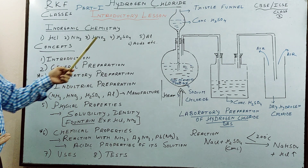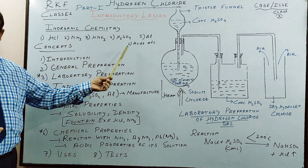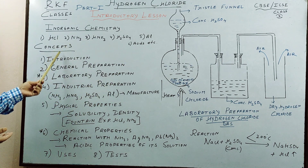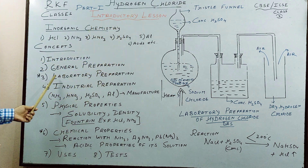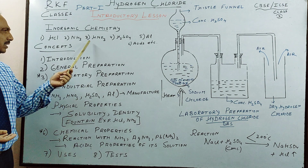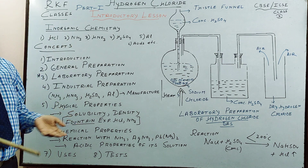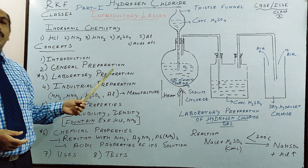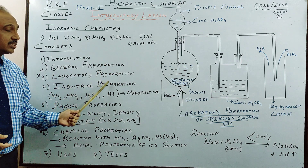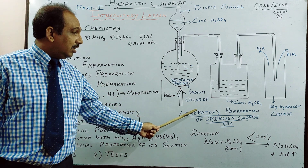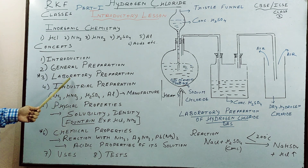We know about the introduction of all these things. From examination point of view, introductions are not so important. Second, we study general preparation. A gas like HCl or ammonia can be prepared in many ways — two, three, four, or five ways. These are called general preparation. One of the general preparations we use is laboratory preparation, and this is what I will talk to you in detail — laboratory preparation of hydrogen chloride gas.